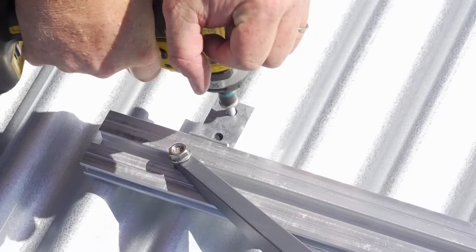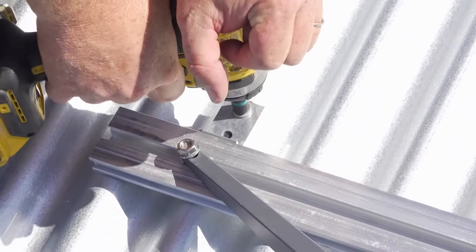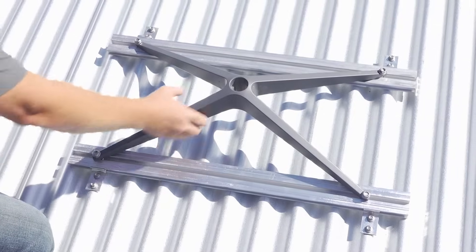If the roof you're working with is corrugated instead of trapezoidal, don't worry, the GripperFix system will work with that profile type too.